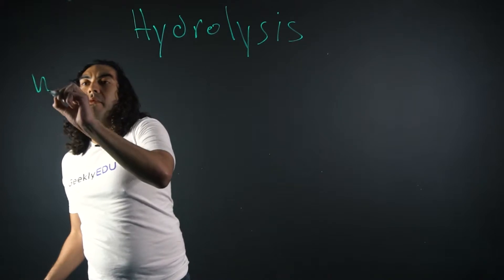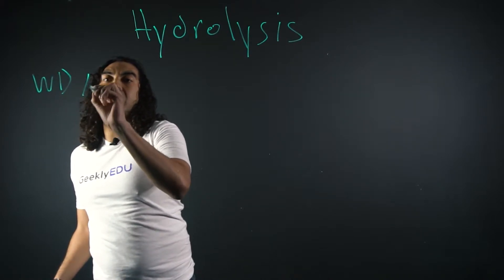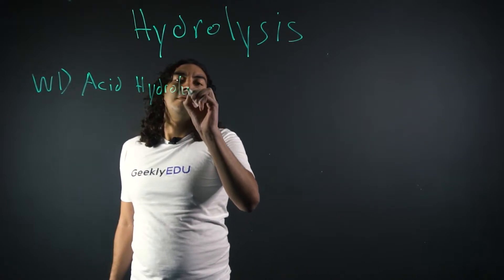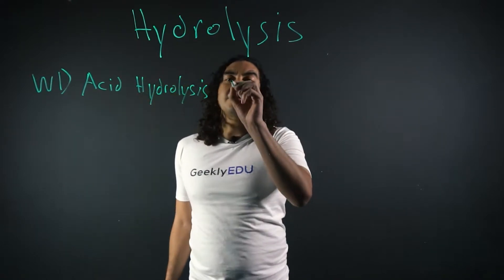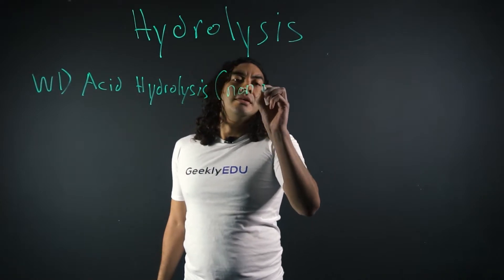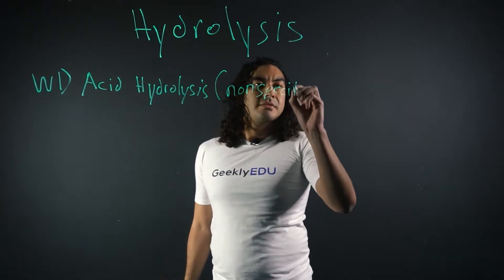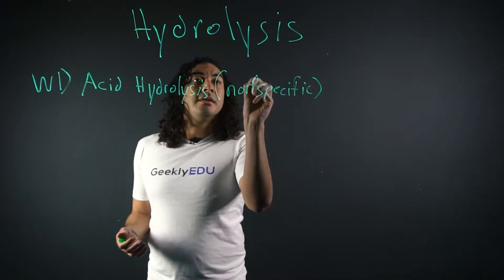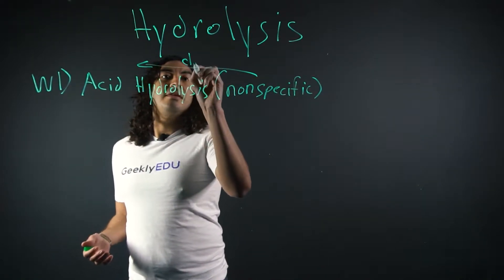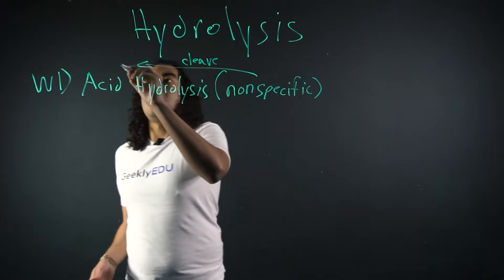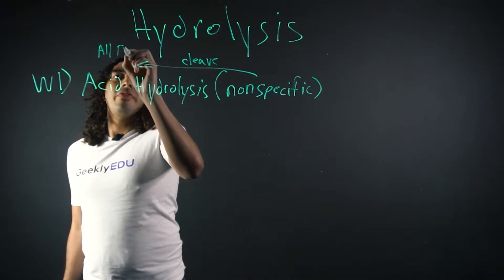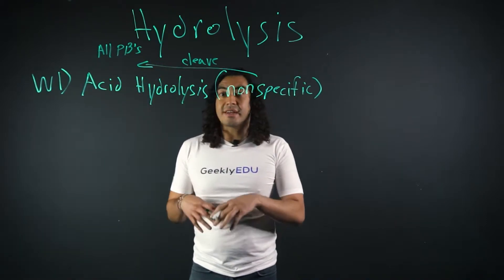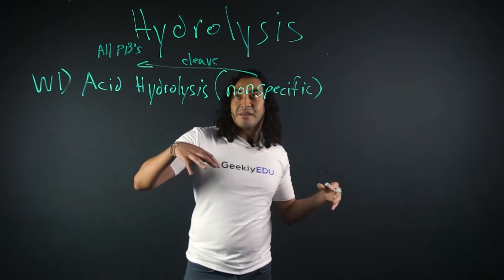So way number one is acid hydrolysis. And acid hydrolysis is going to be nonspecific. So what nonspecific means is it's going to cleave all the peptide bonds within your polypeptide. So it's not going to segregate, it's just going to cleave them all, get rid of all the peptide bonds.